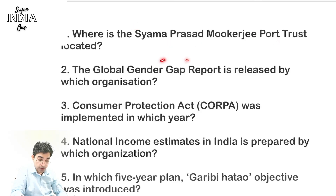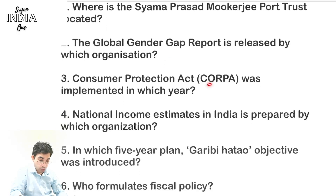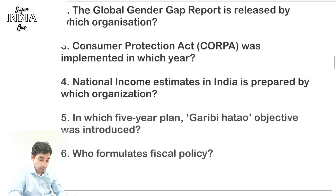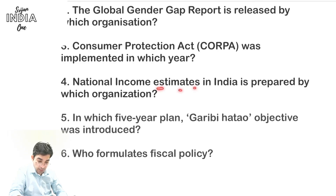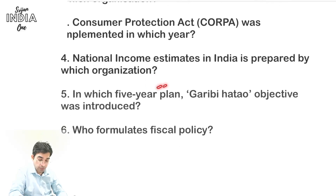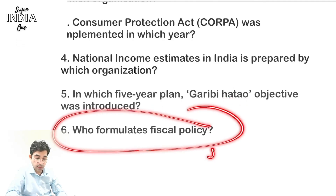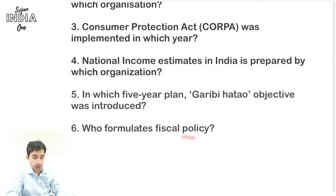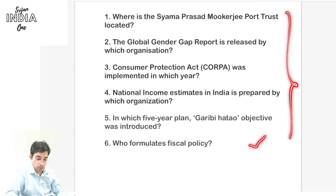Today's questions: Where is the Syama Prasad Mukherjee Port Trust located? Which organization releases the Global Gender Gap Report? In which year was the Consumer Protection Act implemented? Which organization prepares national income estimates in India? In which Five Year Plan was the 'Garibi Hatao' objective introduced? And who formulates fiscal policy — monetary policy versus fiscal policy? These are six questions for today.